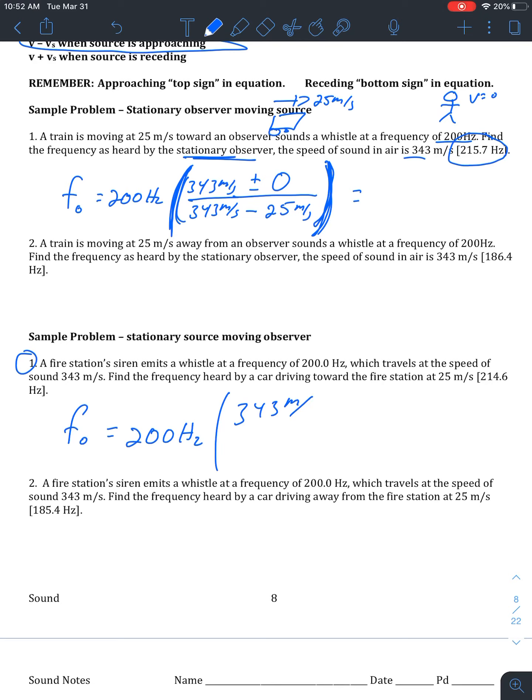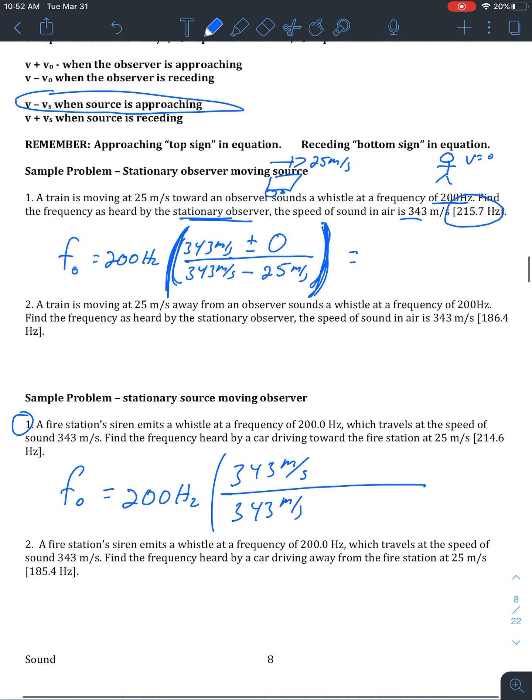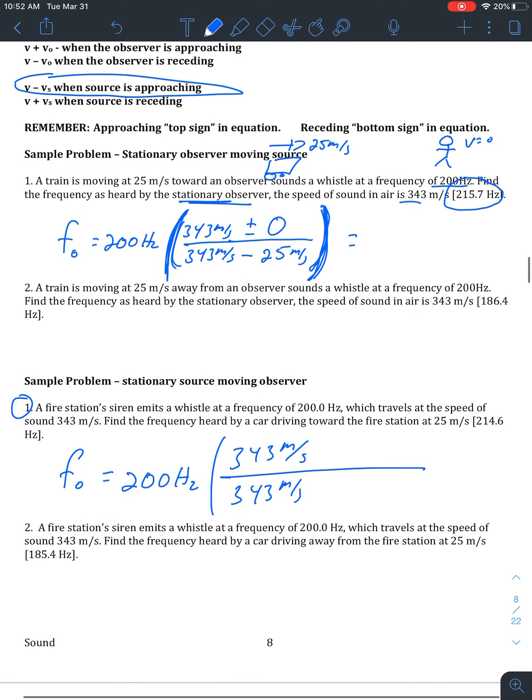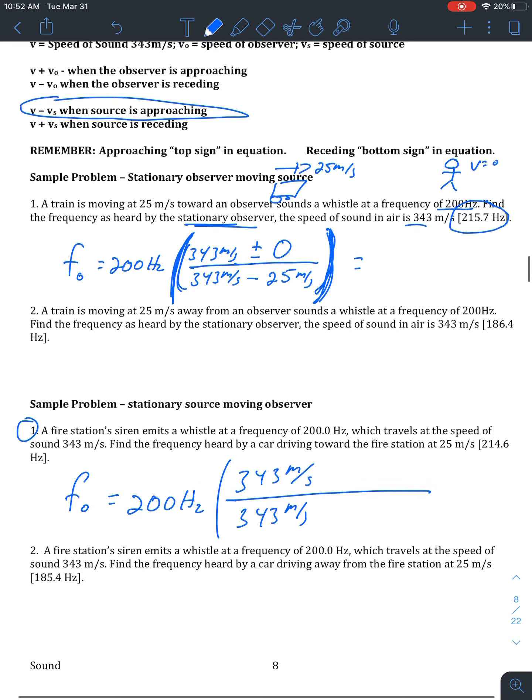Again, 343. You'll see the pattern starting to develop here. It's always the 343s. Now our observer is the one moving. And it's moving towards the fire station. So when it's approaching the fire station, we're going to add. So that's at 25 meters per second. And usually fire stations don't move. They're fixed structures. So it's just going to be zero. I just put that plus or minus zero in there for emphasis. You can just leave it off if you like. And when we plug that in correctly into our calculators, according to order of operations, we should get around 214.6 hertz.